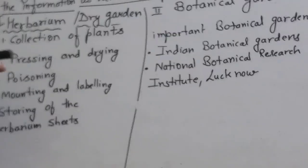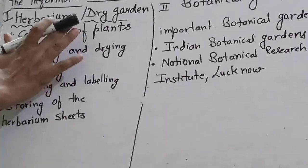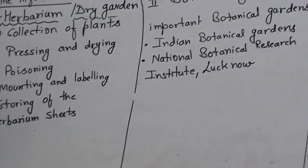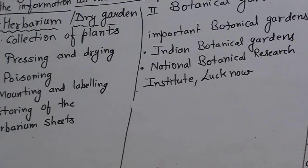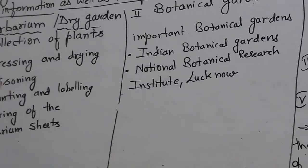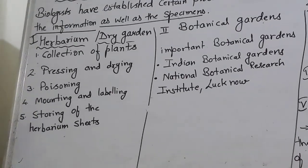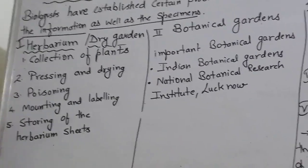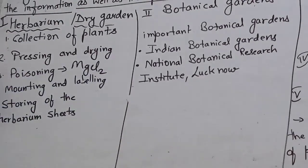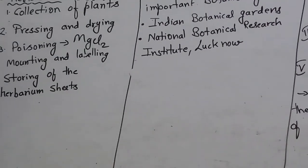After drying the material, we paste it onto a sheet. We fix the dried specimen of the plant onto the sheet. There may be insects or termites that can destroy our collection. So we apply a poisonous substance — mercury chloride — just as we use insecticides and pesticides at home, or phenylene to stop insects. We spray mercury chloride to preserve our plant material.